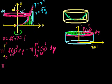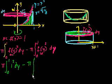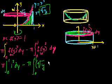So we get pi times from 0 to 1, 1 squared dy minus pi. And we're still going from 0 to 1. Remember, that's the y boundaries. And now, what's f of y? Well, here, f of y is square root of y. Square root of y squared dy, right?